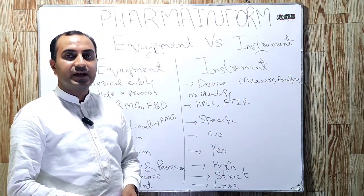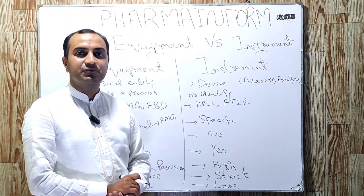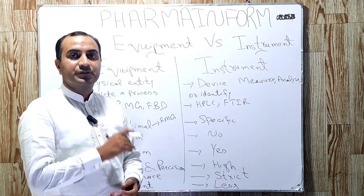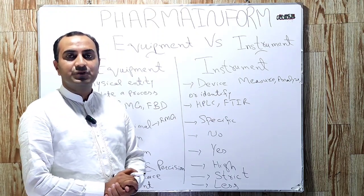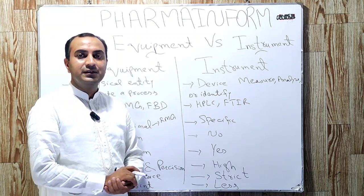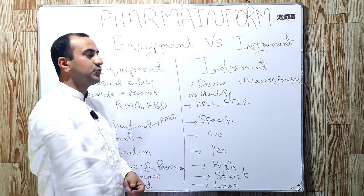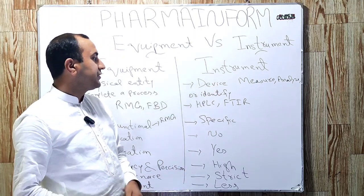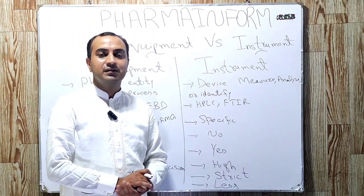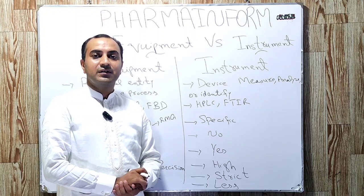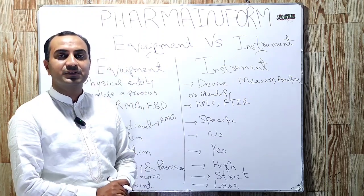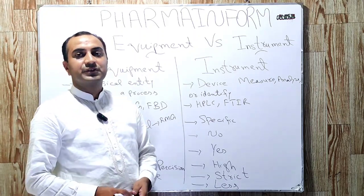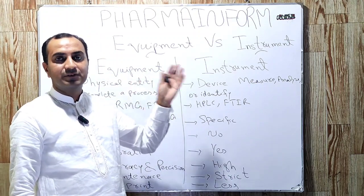Equipment is a physical entity or machine which is used in pharmaceutical industries to complete a process or task — meaning equipment is a machine used for processing any product. An instrument, on the other hand, is a device which is used to measure, analyze, or identify data. In summary, instruments are measuring devices and equipment are processing machines.